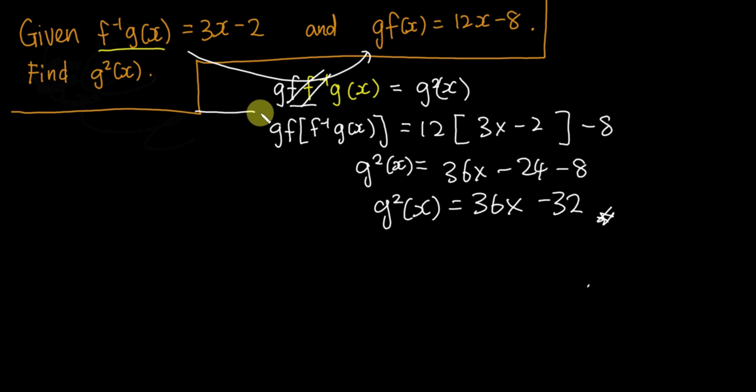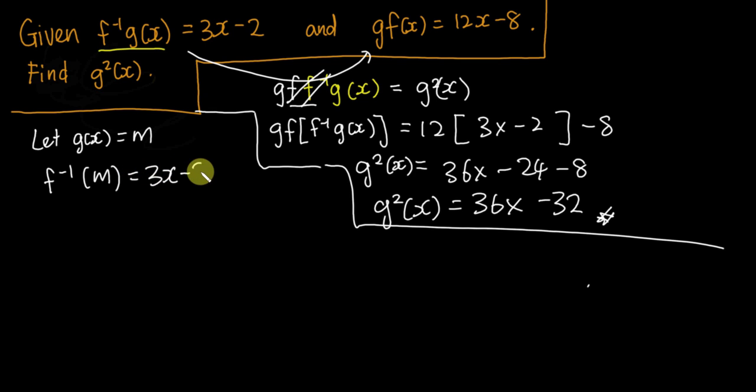Let's say I let the g(x) become m. So for this one, basically I have f inverse m equals 3x minus 2. So if I move my f to the other side, f inverse basically becomes the function f.